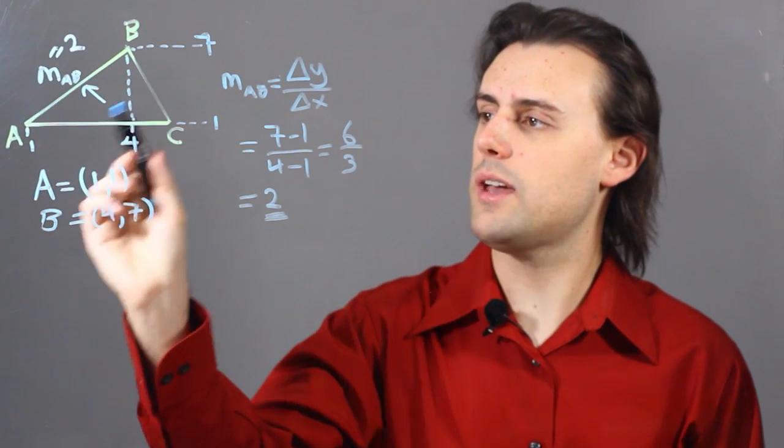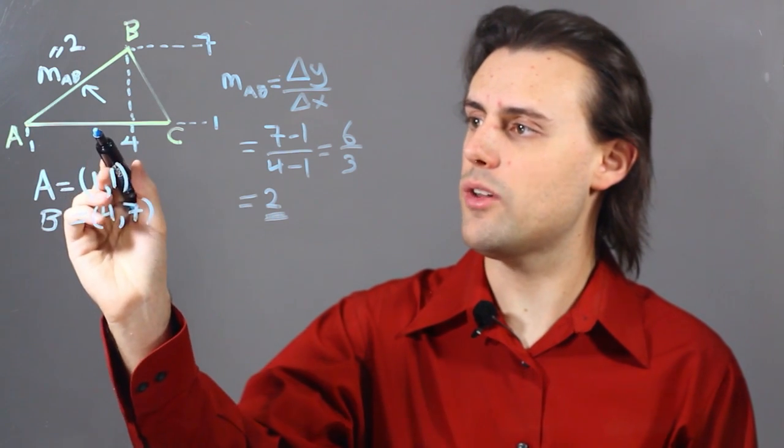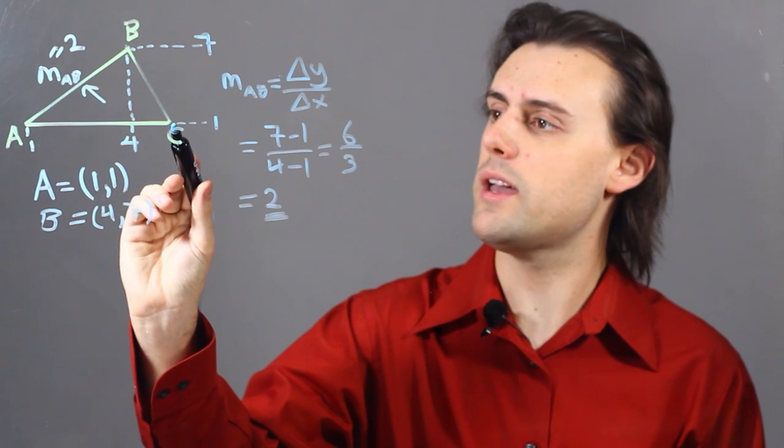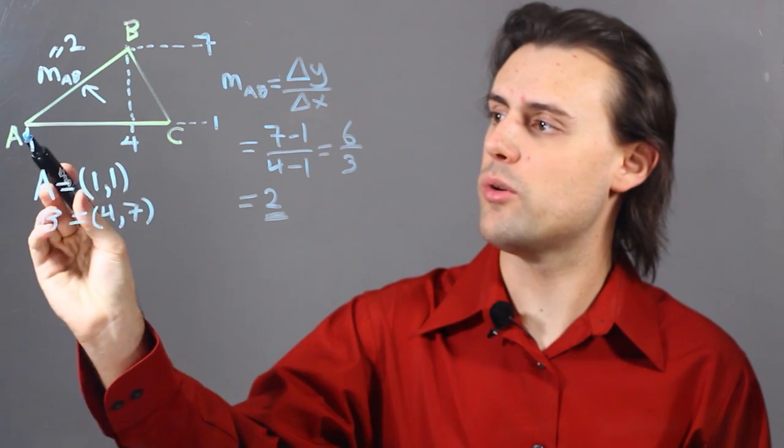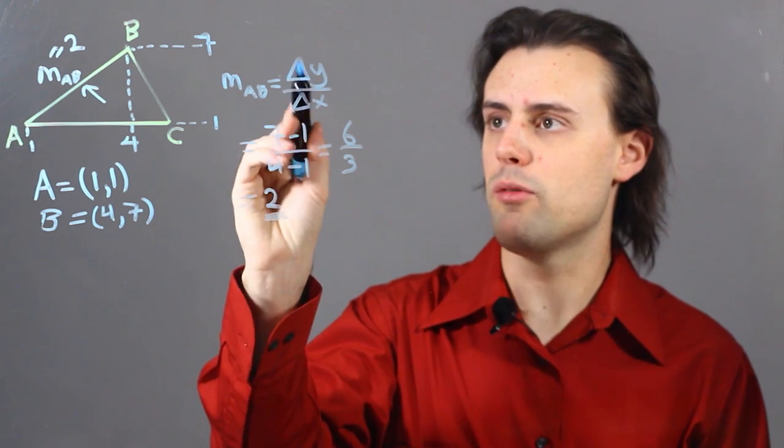I could do the same for these sides as well. Here I can tell that this slope is going to be equal to 0, because the y components of the coordinates for points A and C are identical, so the delta y would be equal to 0.